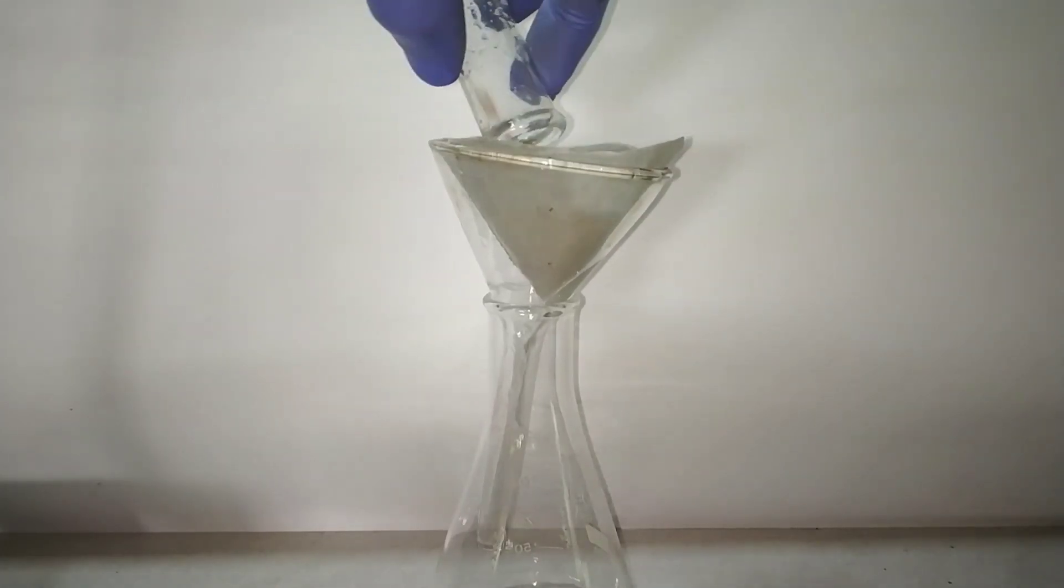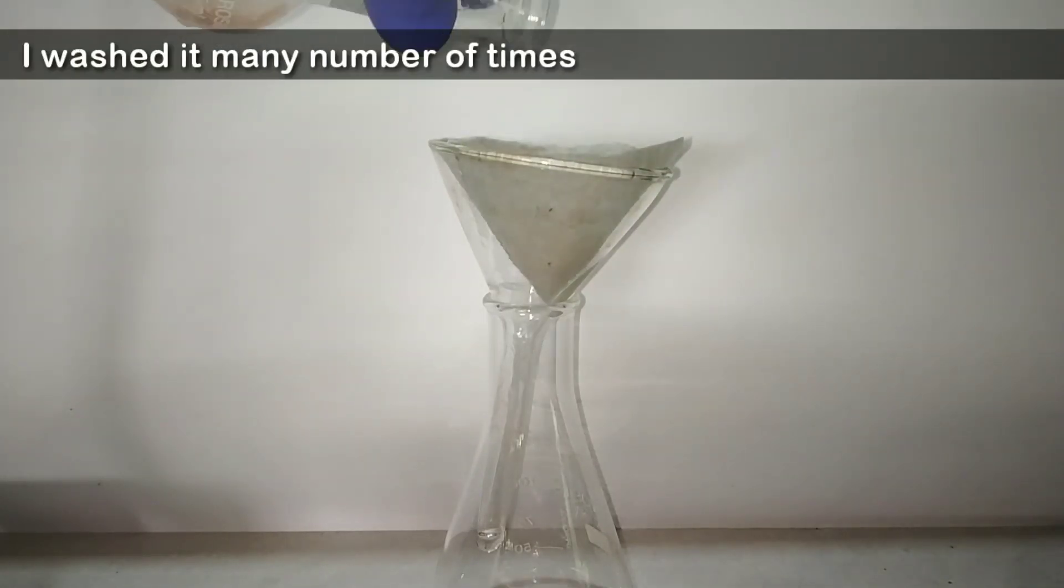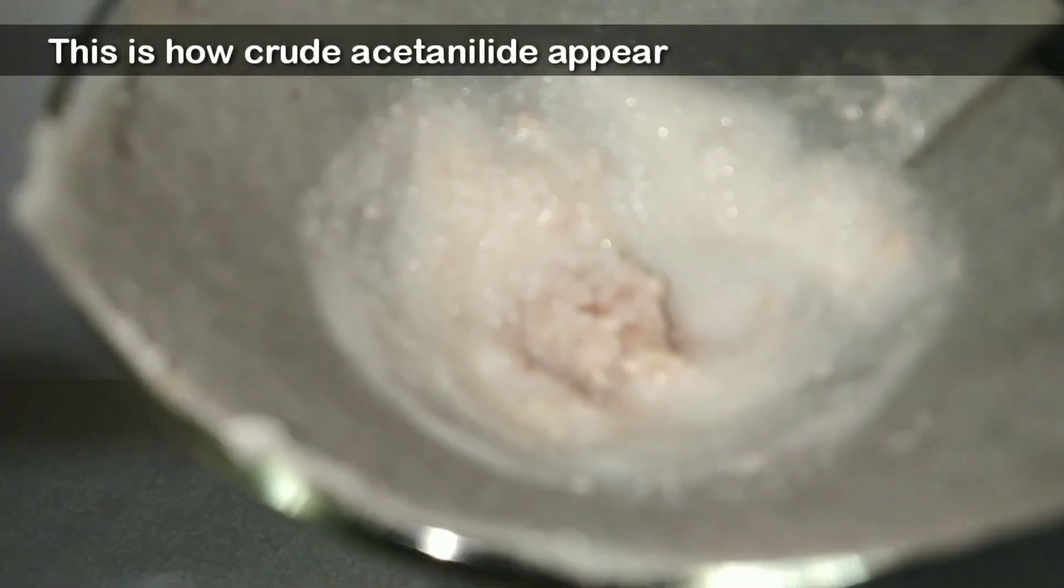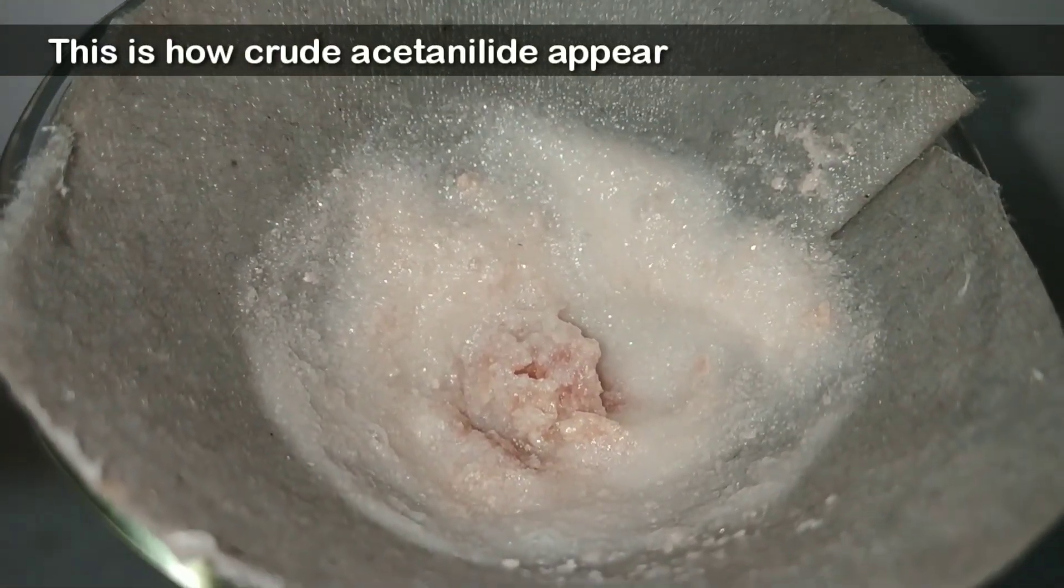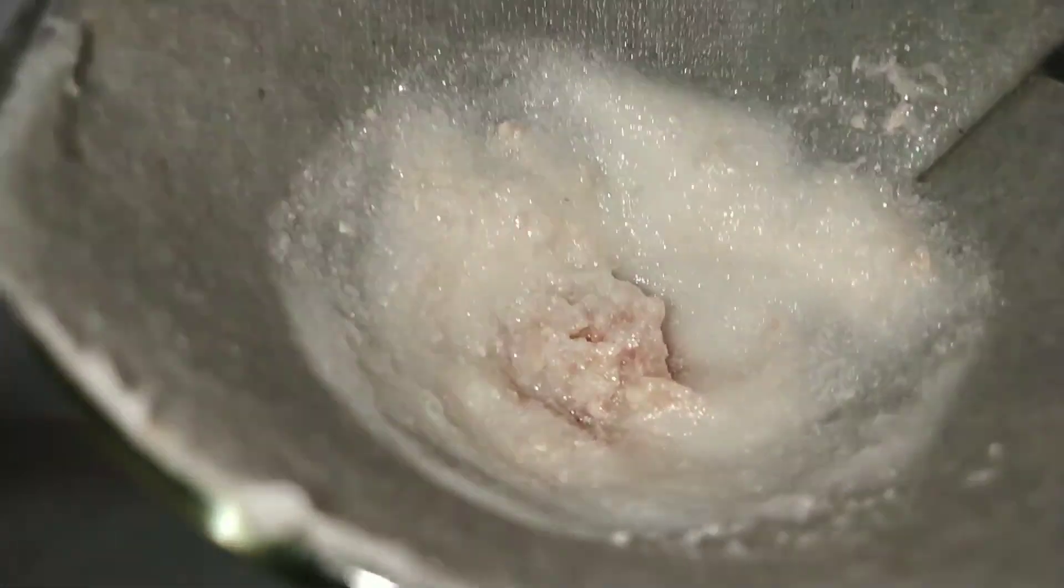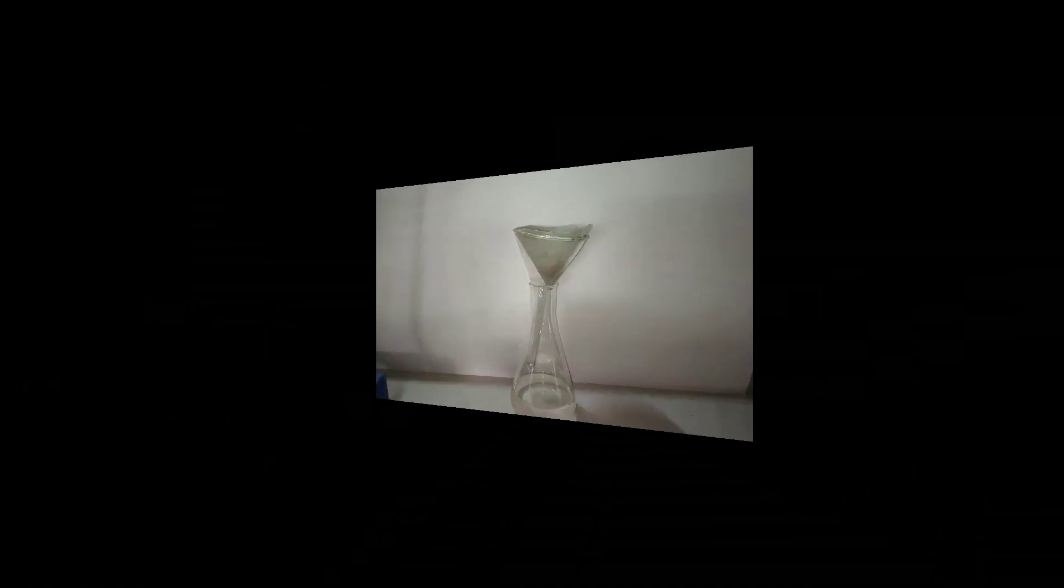Now I am washing the flat bottom flask with ice cold water and pouring the solution into the filter paper so that I can collect the organic compound that is stuck onto the flask. And this is how the crude acetanilide product appears. You can still see the reddish brown color. And I washed again with ice cold water.